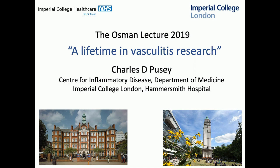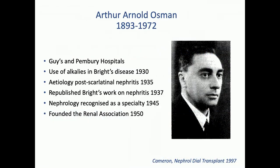Most of this work has been done at the Hammersmith Hospital, more recently under the aegis of Imperial College. A word about Arthur Osmond, who was a remarkable man who trained and practised at Guy's — which is nice, because I did as well. After the war, he set up the first renal unit, which was in Pembrey Hospital. He was very interested in glomerular nephritis. He did work on Bright's disease and post-scarlatinal nephritis. It was due to Osmond that nephrology was recognised by the Royal College as a specialty back in 1945, and he was one of the founders of the Renal Association.